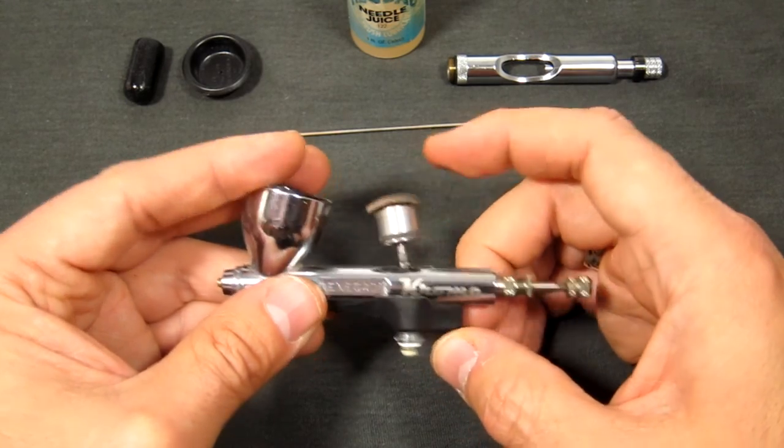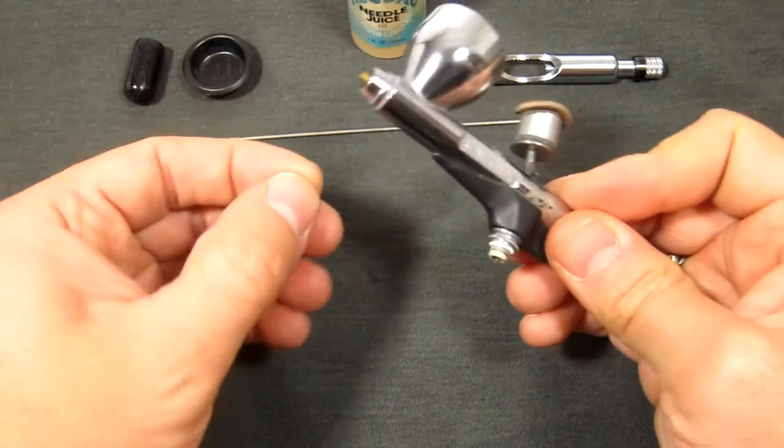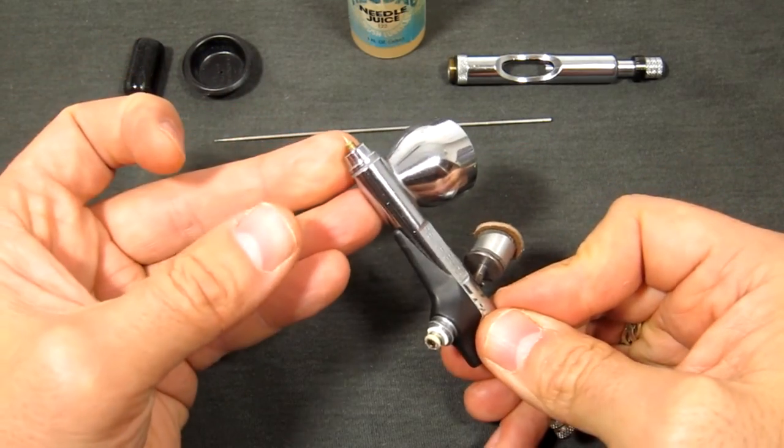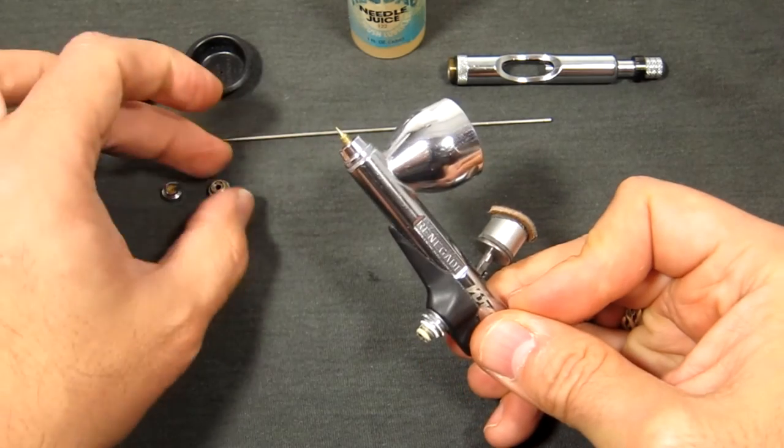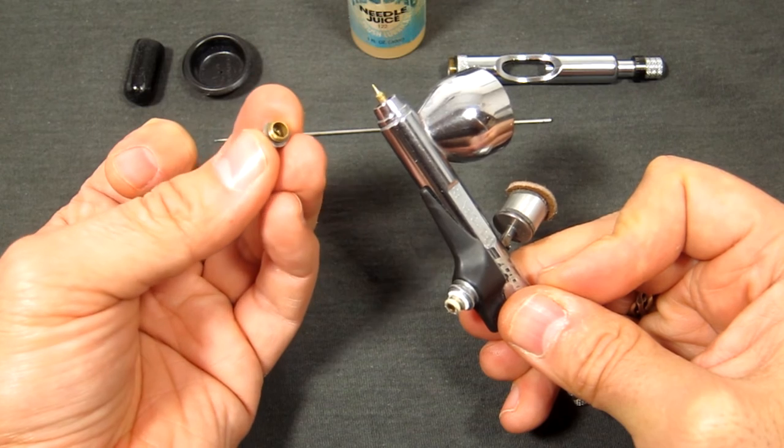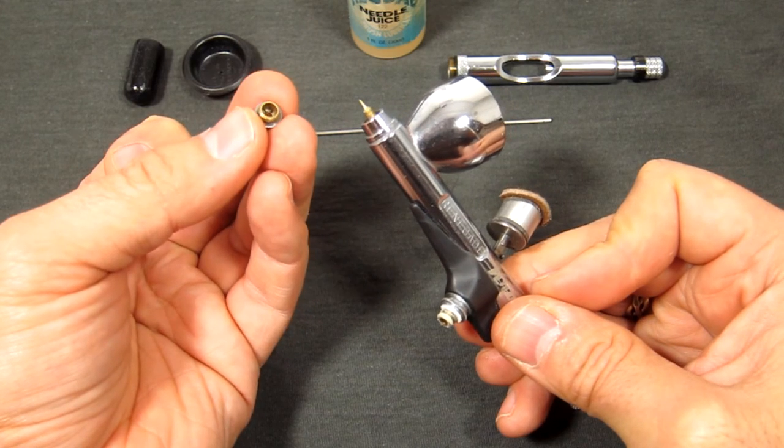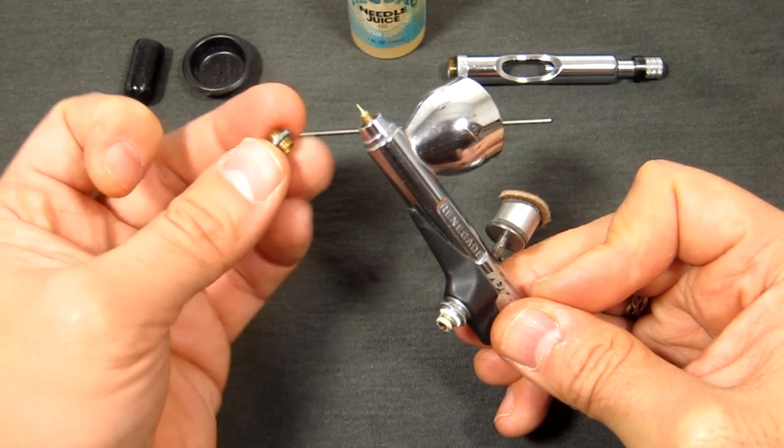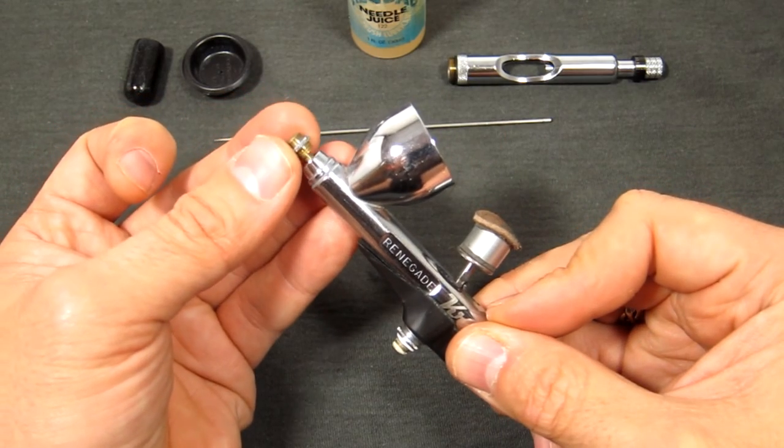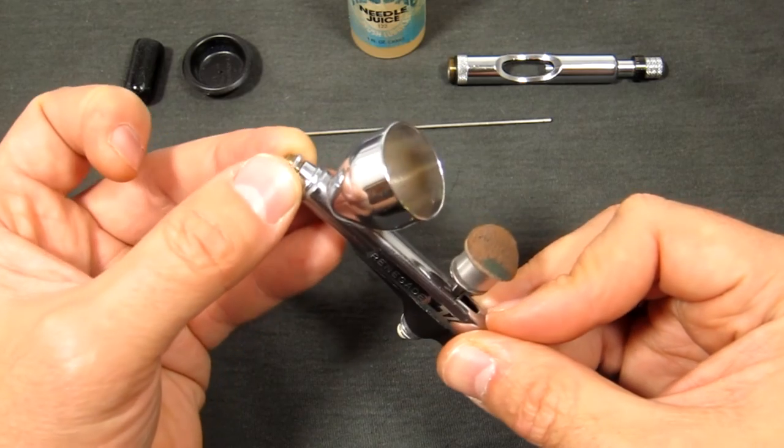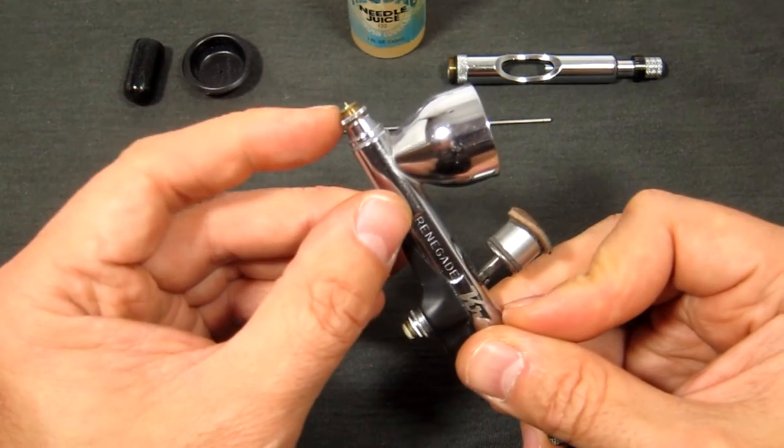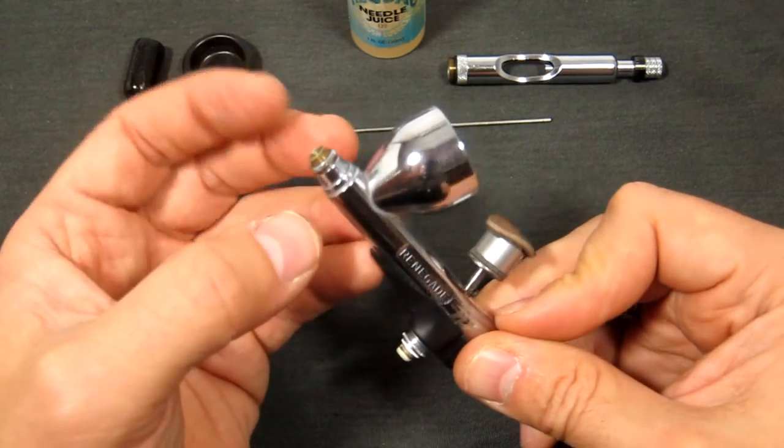Okay, now again we're just going to continue putting it back together. We've got the nozzle—very carefully, it's a very small piece remember—and remember this deep side goes towards the airbrush body, this shallow side goes towards the front of the airbrush. And we gently put that on, make sure we don't dislodge anything.